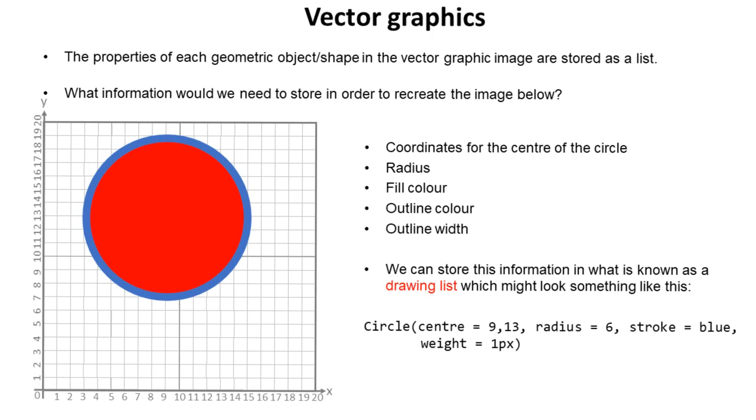Well, I definitely need to know the coordinates for the center of the image. I'd need to know its radius. I'd need to know the color you wanted to fill it with. I'd also need to know the outline color and also the outline width. If you were supplied with all this information, you could recreate this circle exactly without having to store the information for every single pixel that makes it up.